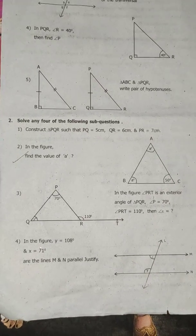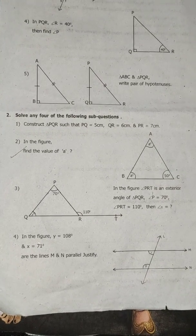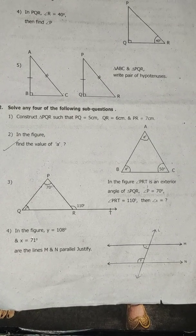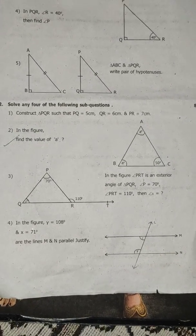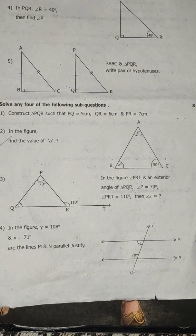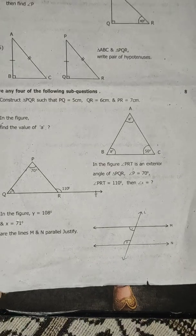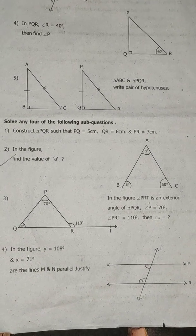Question 2: Solve any 4 of the following sub-questions. Construct angle PQR such that PQ is equal to 5 cm, QR is equal to 6 cm, and PR is equal to 7 cm.